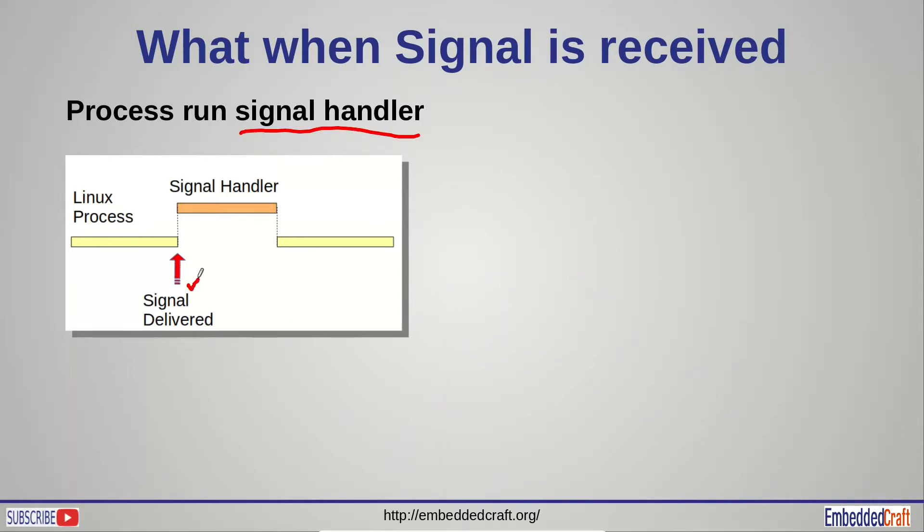Question may be what will a process do when signal is received. When signal is received, the process will run a signal handler. When execution of signal handler is complete, control will return back to the process. We have to register the signal handler first.